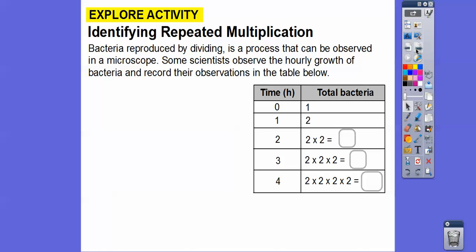Here's an example. Bacteria reproduce by dividing, a process that can be observed under a microscope. Some scientists observed the hourly growth of bacteria and recorded their observations in a table. At zero hours there was one bacterium, after one hour it doubled to two. After two hours: two times two; after three hours: two times two times two; and so on. Notice that after one hour there's one two, after two hours there are two twos, after three hours there are three twos being multiplied.